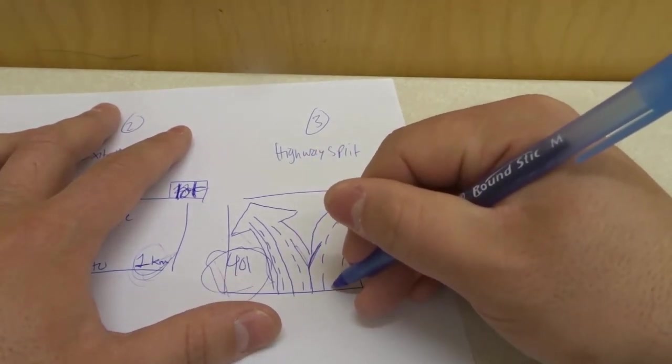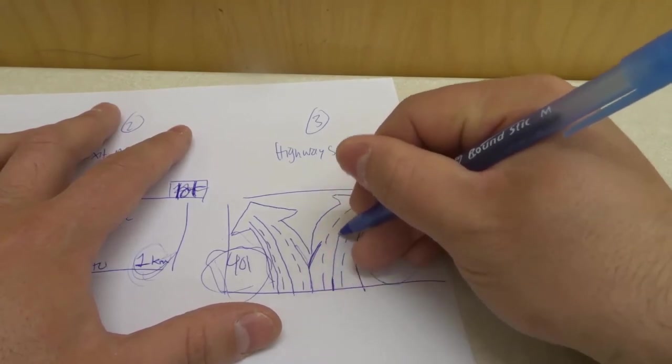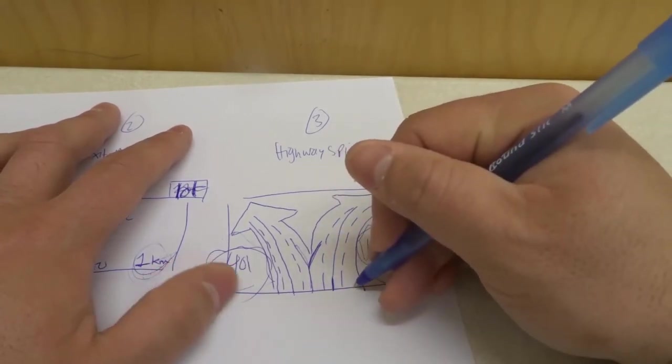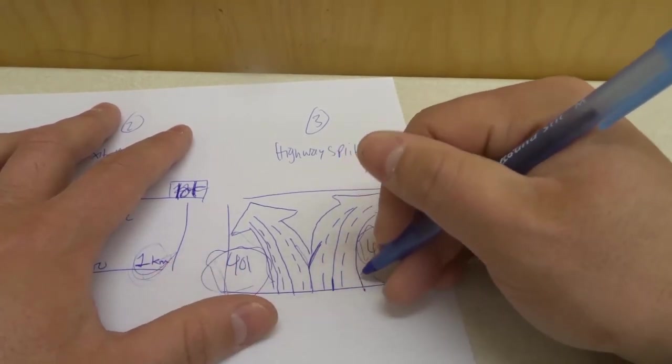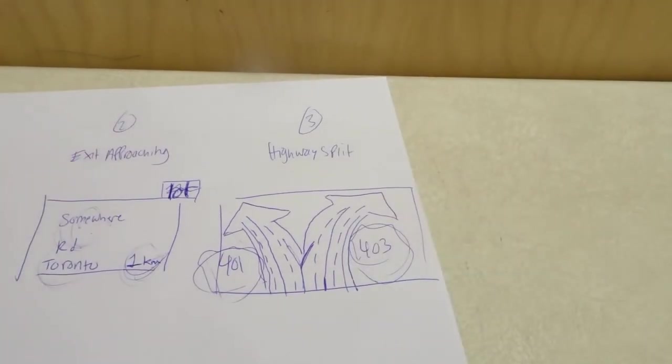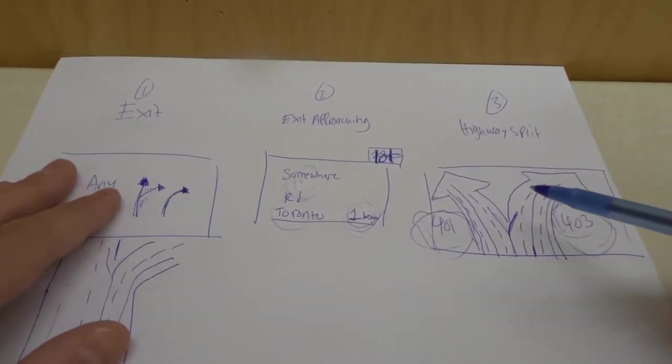Then we have the fourth lane from the left right here, which is this one only goes onto the 403 and fifth lane from the left or all the way that the rightmost lane only goes onto the 403. That's it. I mean that's really all that there is to it. It's not that difficult.